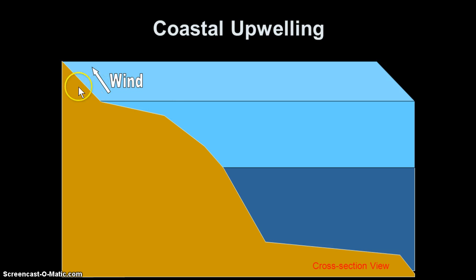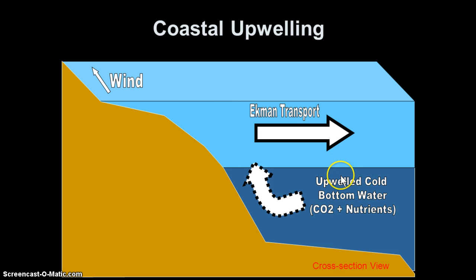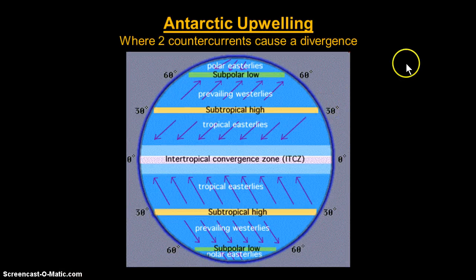Let's look at a 3D schematic. Here's our coast. The wind is blowing up the coast, and Ekman transport pushes this surface layer of water away from the coast. Since it's continent — it's land — there's no water here to replace that. So the only place for the water to come from is from down deep. Water moves off and is replaced from down deep — the same thing as equatorial upwelling. We breach that barrier, bring up cold bottom water, which is full of nutrients, CO2, and oxygen, and that fuels primary productivity. That's coastal upwelling.